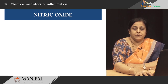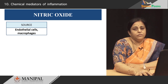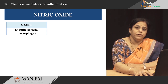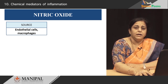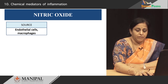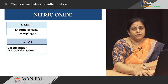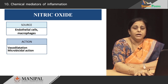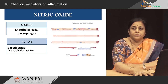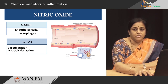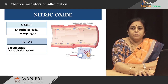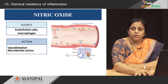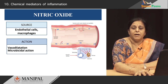Next, we have nitric oxide (NO). Nitric oxide is normally produced by endothelial cells. Macrophages can also produce nitric oxide during inflammation through an enzyme called iNOS (inducible nitric oxide synthase). The action of nitric oxide includes vasodilatation and it is also a potent microbicidal agent. Endothelial cells producing nitric oxide act on themselves causing vasodilatation, while macrophage-generated nitric oxide results in microbicidal killing.